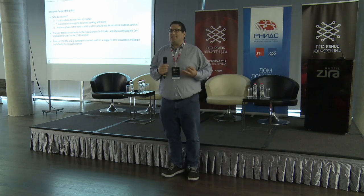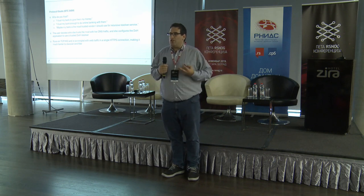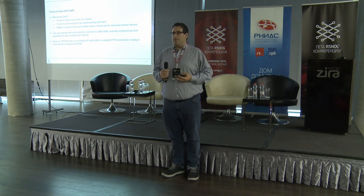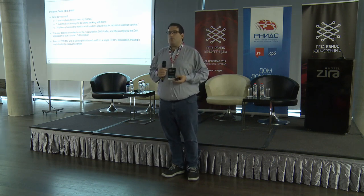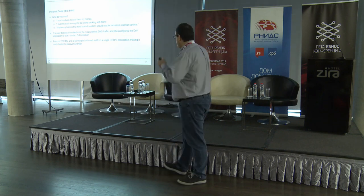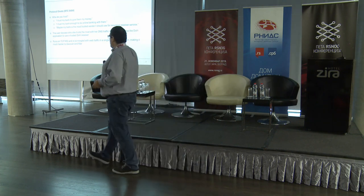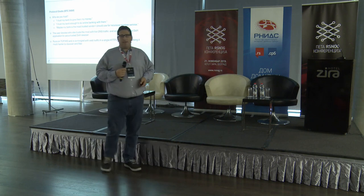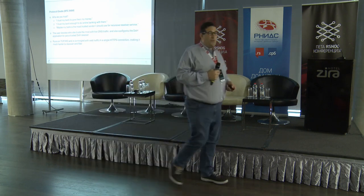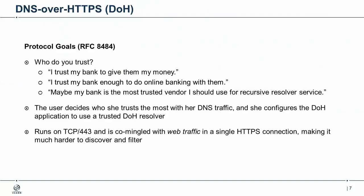That's the design of DoH. The design of DoH is to give end users privacy for their DNS data — privacy we've never had before. Unlike DoT, it doesn't have its own port. DoH runs on port 443, which is where all HTTPS traffic goes. It's completely commingled and you can't figure out what is the DNS part and what is just regular HTTPS traffic — and that's by design.